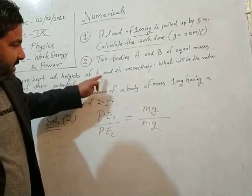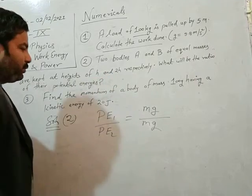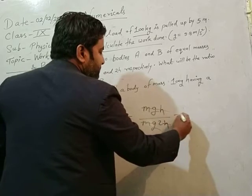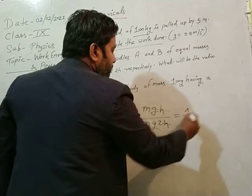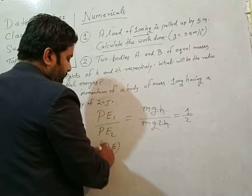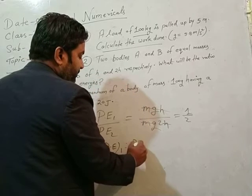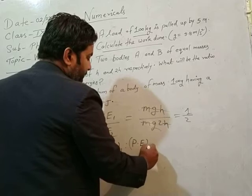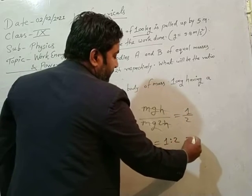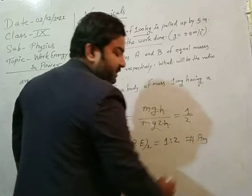So mgh upon mg(2h), cancel mg. So equal to 1 upon 2. So potential energy ratio of first body to second body is equal to 1 ratio 2. Here, this is the answer of the second problem.